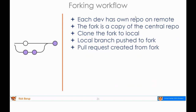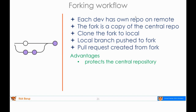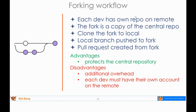The forking workflow is different in nature from all the others. Each developer has their own repository on the remote, and work begins by creating a fork — which starts out as a copy of the central repository. The developer clones the fork to their local machine, does all the work locally, and pushes to the fork rather than to the central repository. When it's time to create a pull request, the source is the fork rather than a branch on the central repository. One advantage is that it protects the central repository — only the maintainer or maintainers can do anything on it.